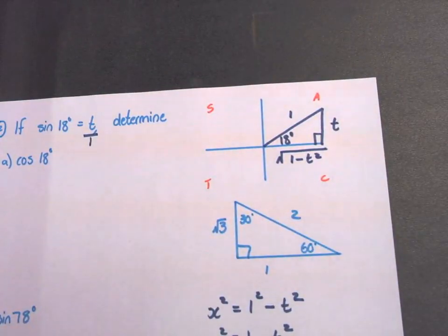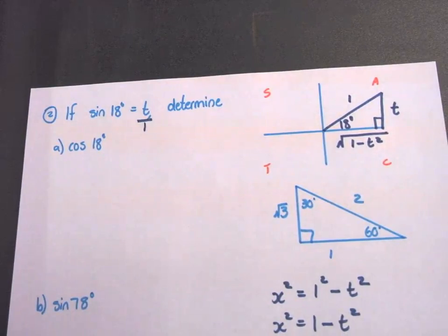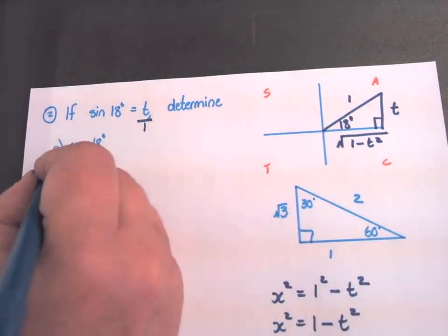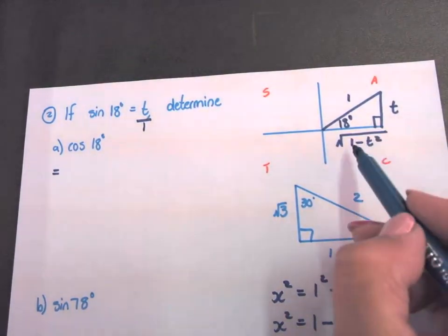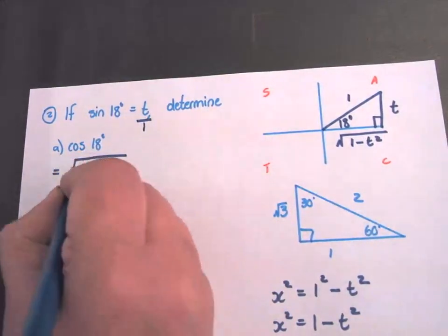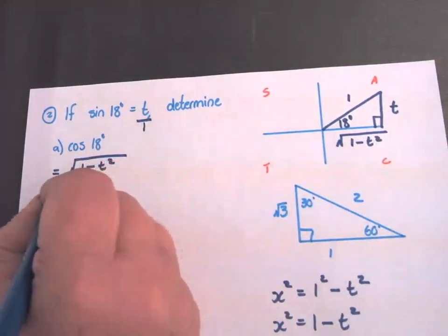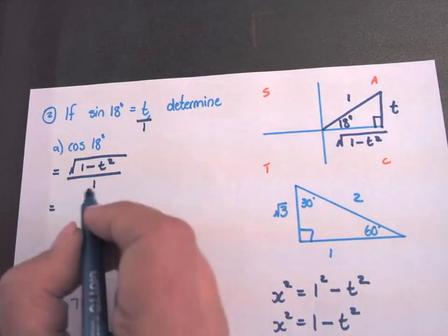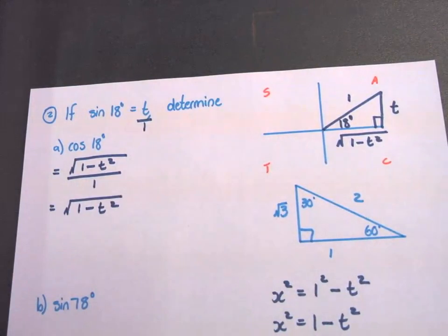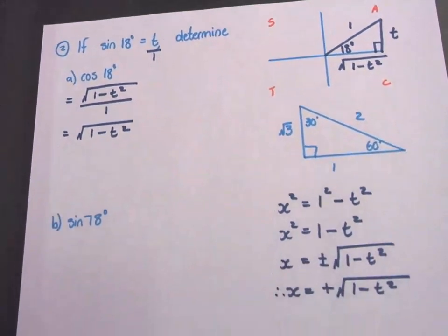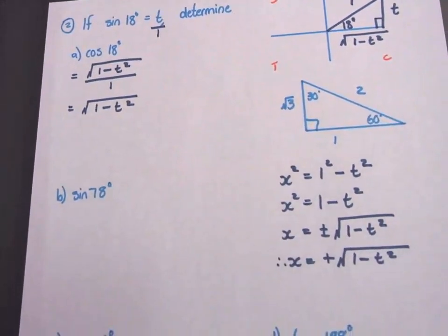Now I have all the lengths, all the side lengths of the triangle and we can start with our sum. Cos 18. Cos is adjacent over hypotenuse. So it's square root 1 minus T squared over 1. And that is square root 1 minus T squared.